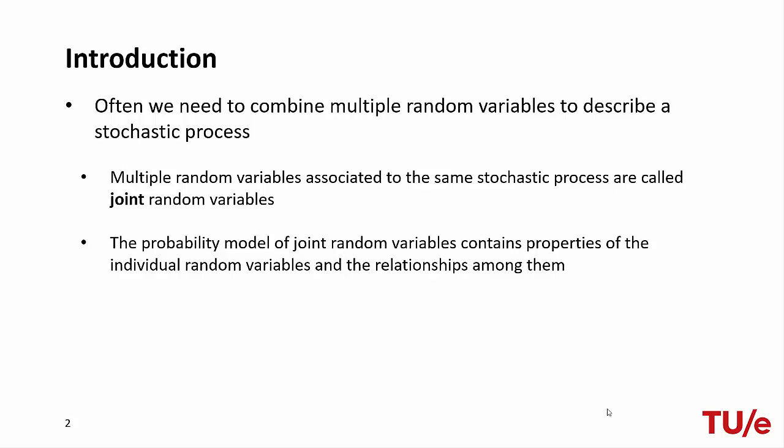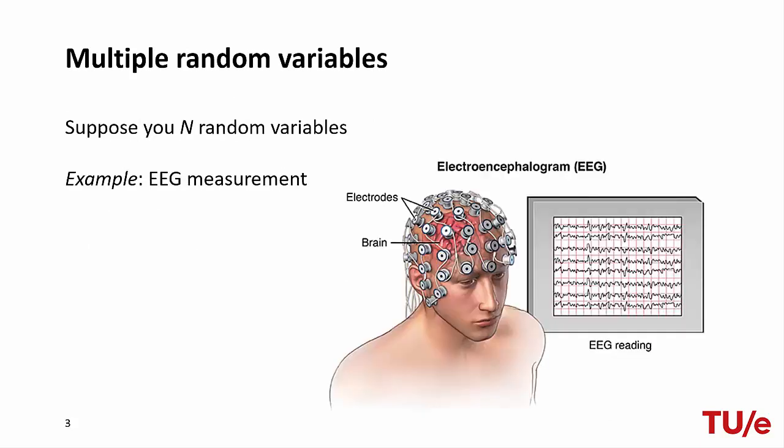For joint random variables, we need to build a probability model that contains both the properties of the individual random variables, as well as the relationship between them. An example where it is useful to consider multiple random variables is the measurement of the electrical activity of the brain performed by an EEG measurement.